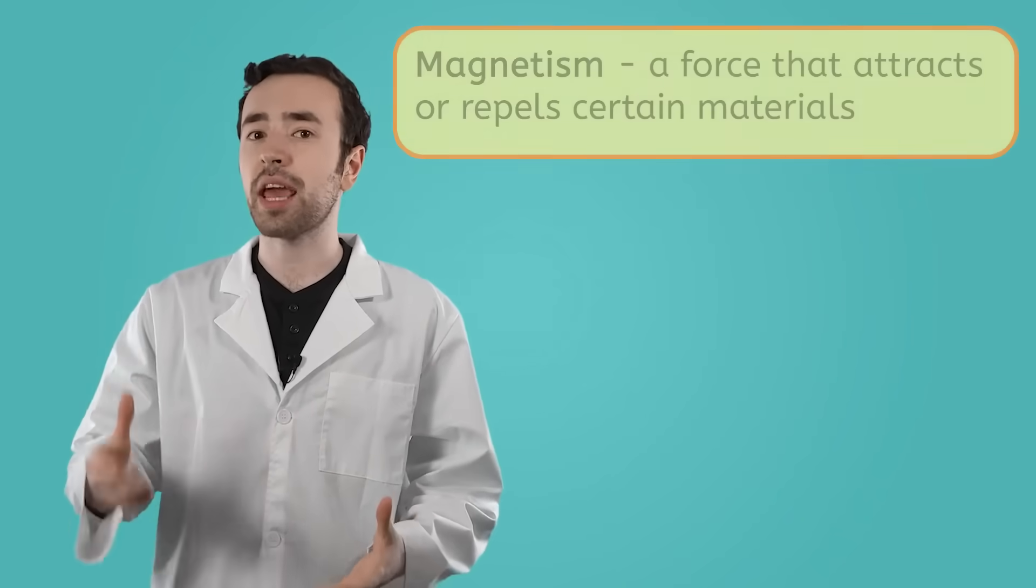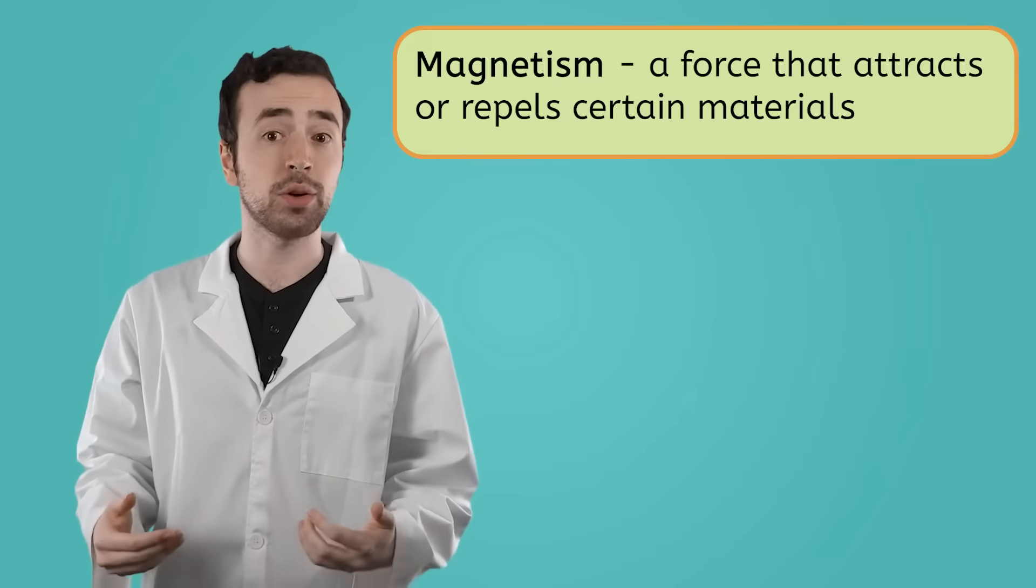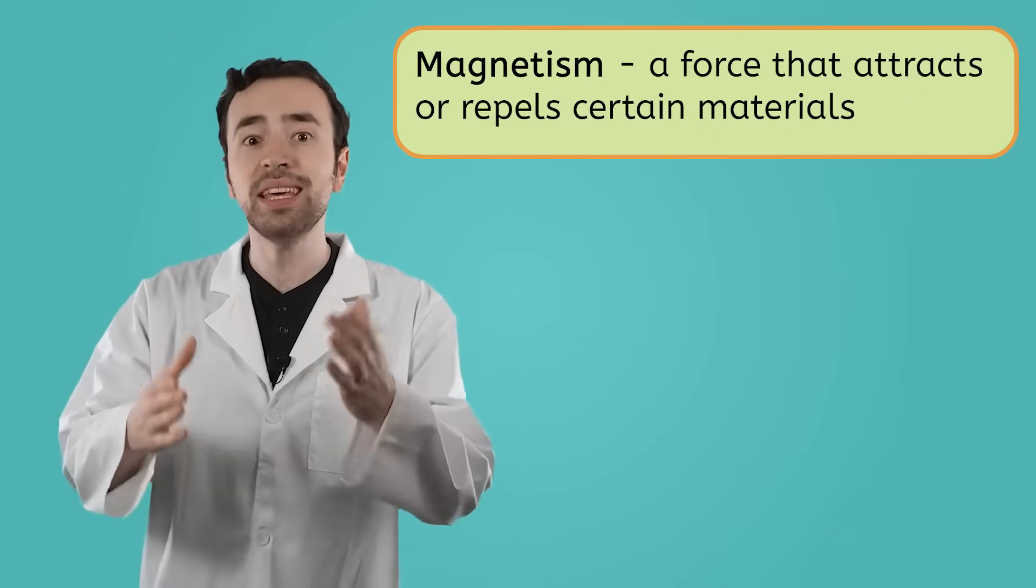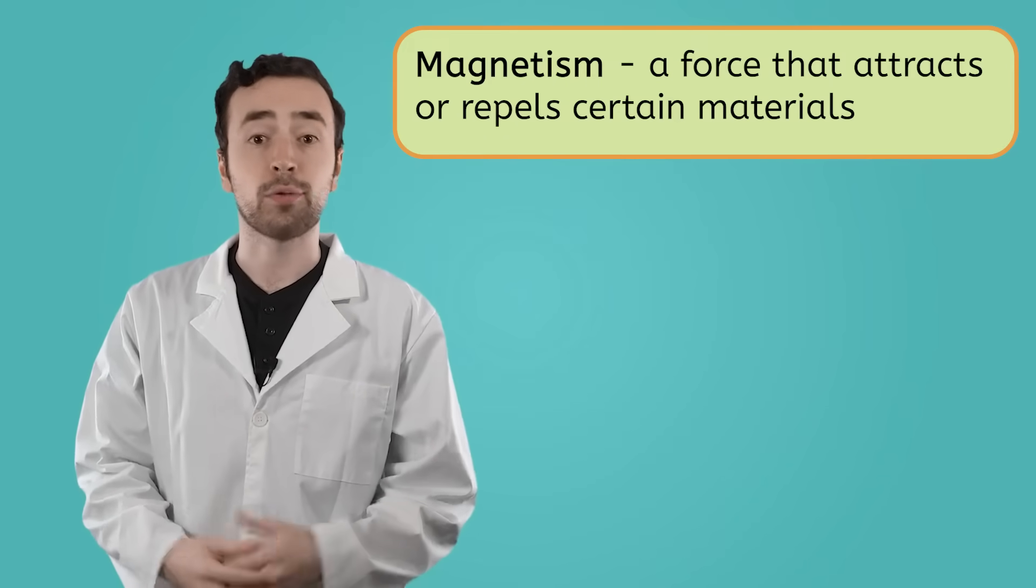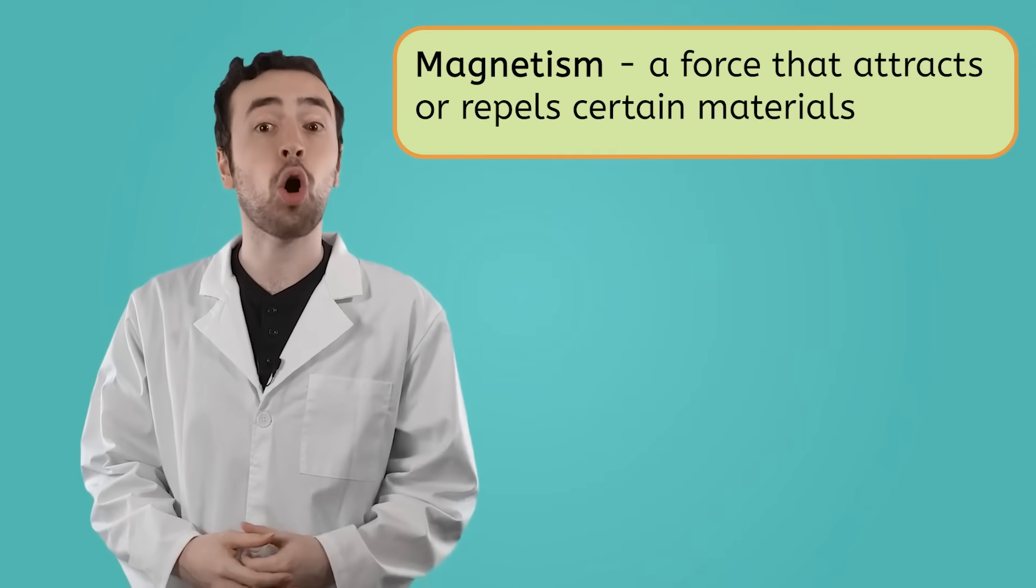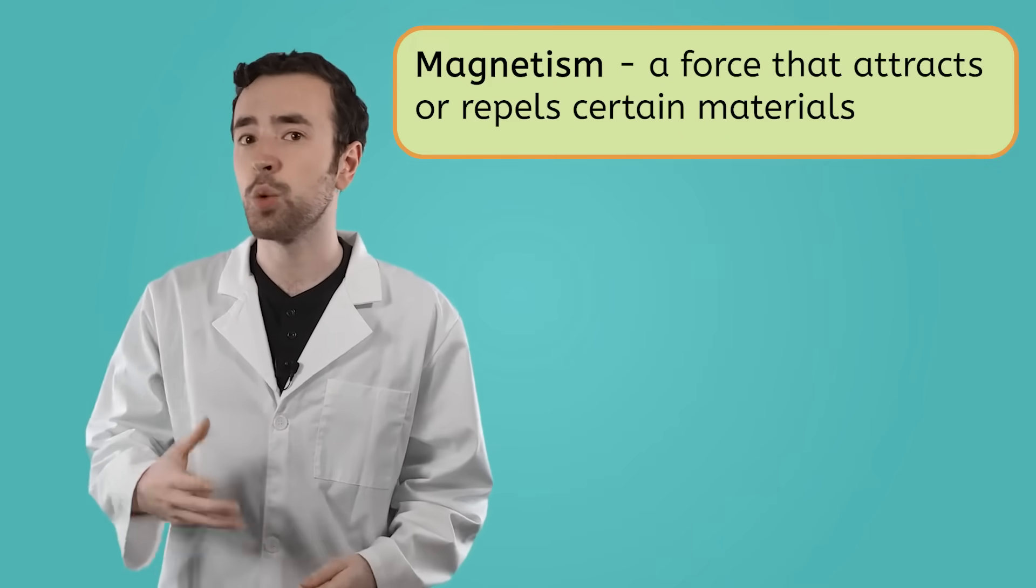I'll definitely keep solubility in mind when I'm building my rocket. But a physical property that's probably even more important than that has to do with magnetism. Magnetism is a force that attracts or repels certain materials. Whether or not an object is magnetic is a physical property. For example, iron, nickel, cobalt, and steel are all magnetic metals, meaning that magnets will attract them.